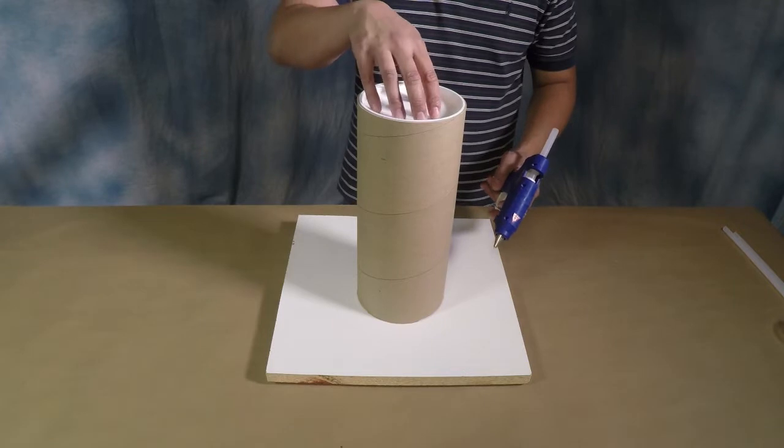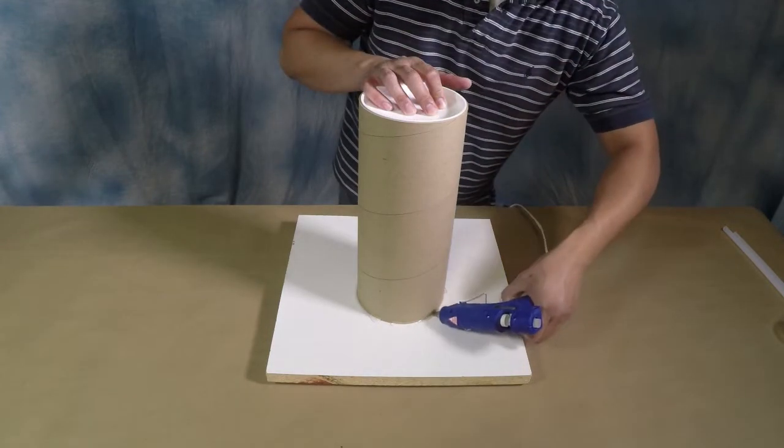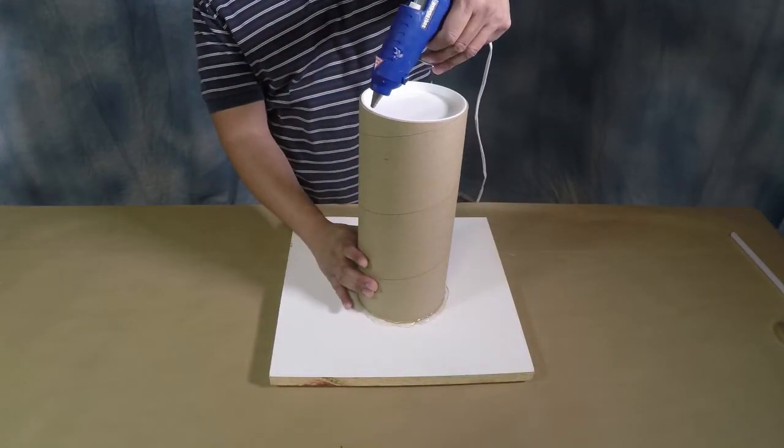So first off, I'm going to hot glue the mailing tube to the melamine board. I'm also going to seal the top of the lid.